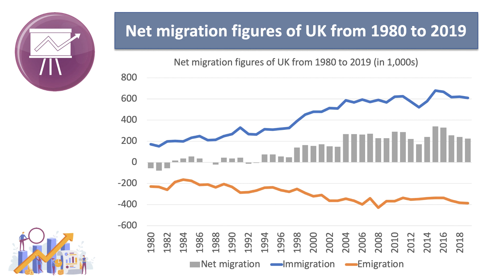Immigration, shown by the blue line, peaked at just over 600,000 people per year coming in in 2015. Equally, more people leave each year — that figure is now around 400,000. The gray histogram shows net migration, the balance between immigration and emigration. Net migration peaked at around 343,000 in 2015 and is now down to about 226,000 as of 2019, although the data is quite hard to measure accurately.